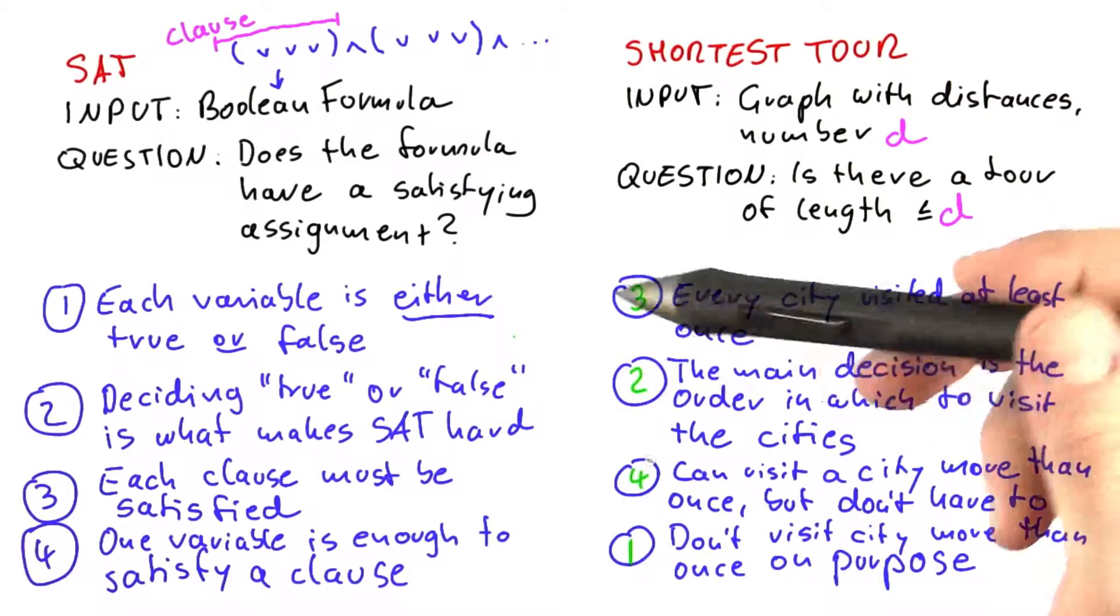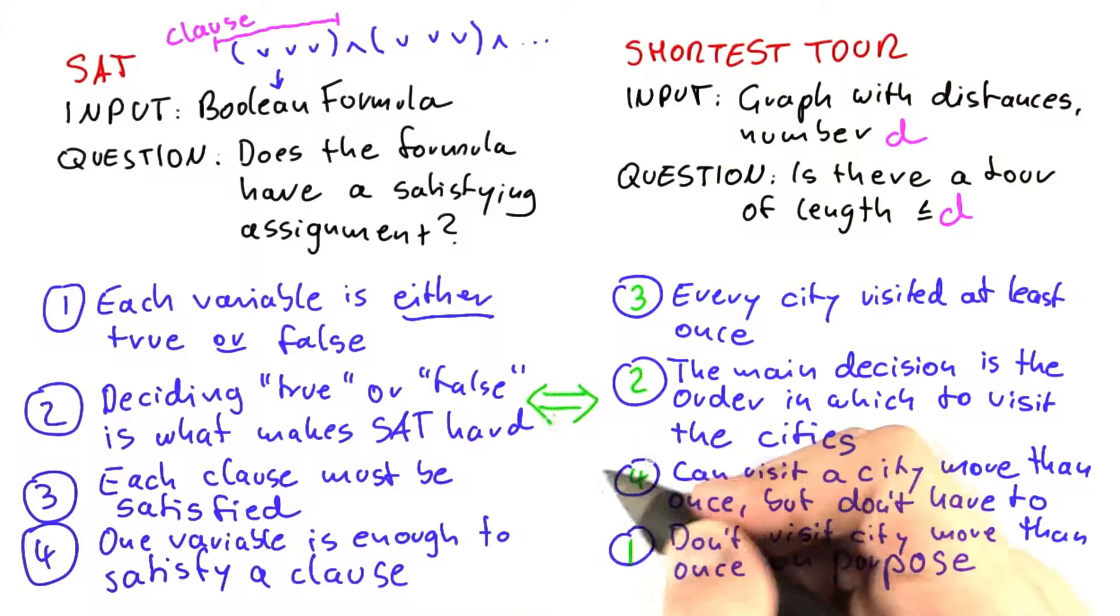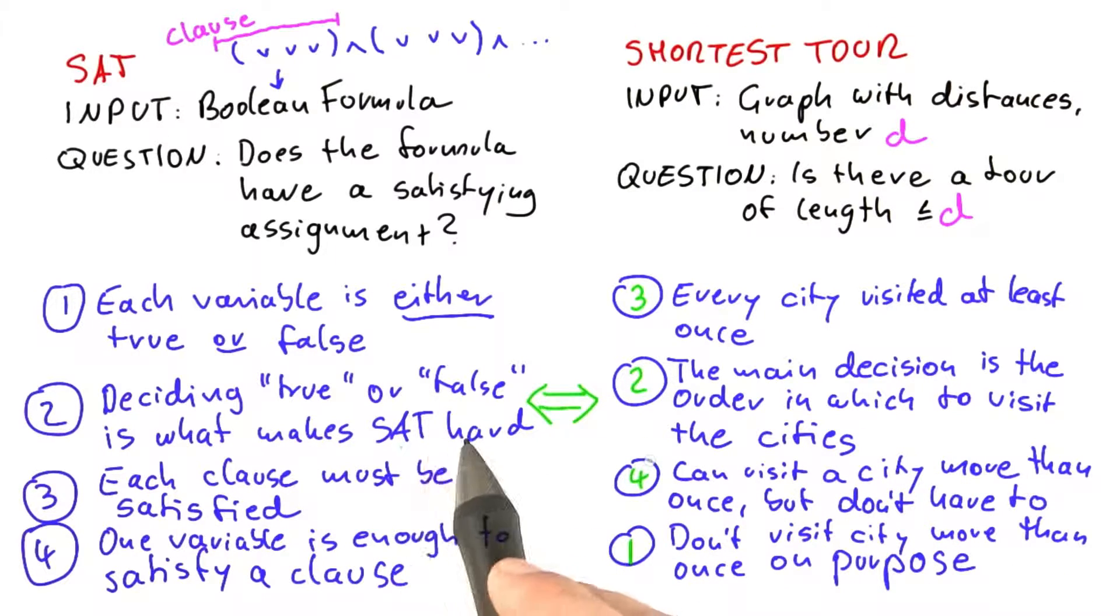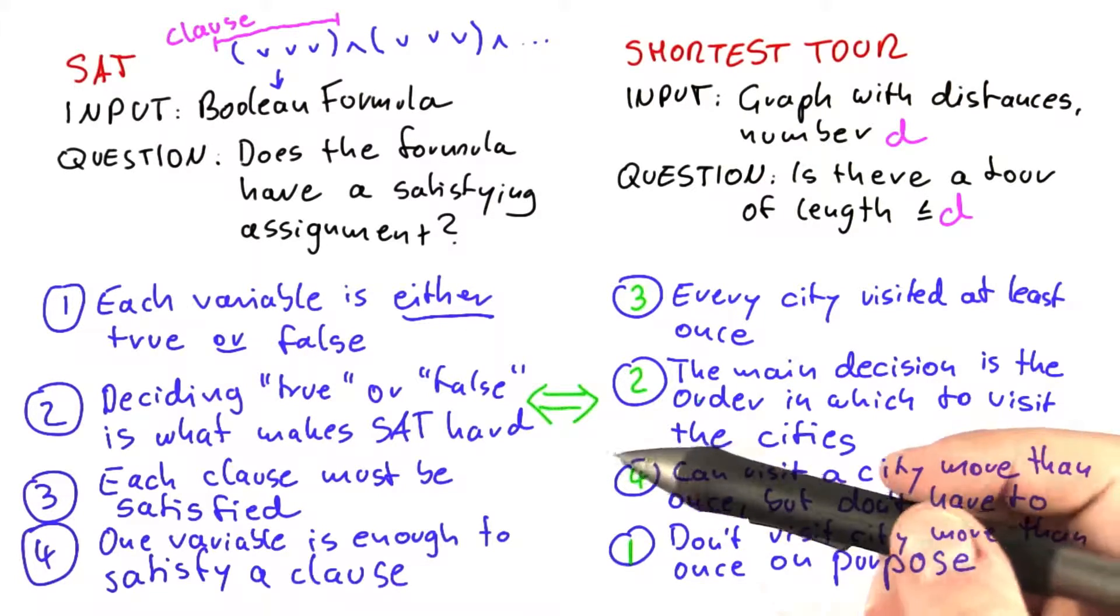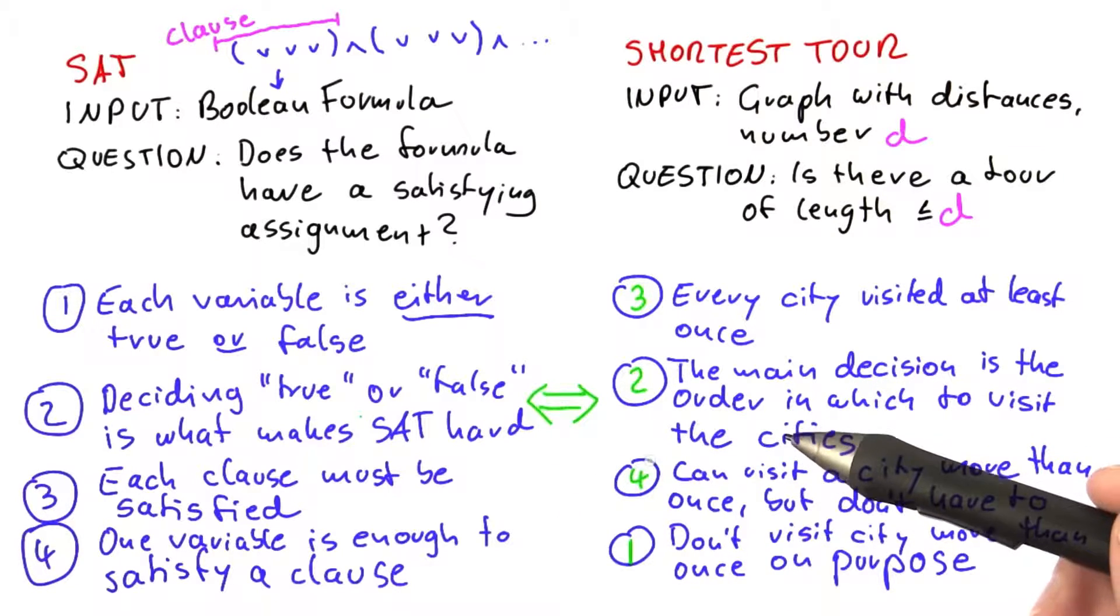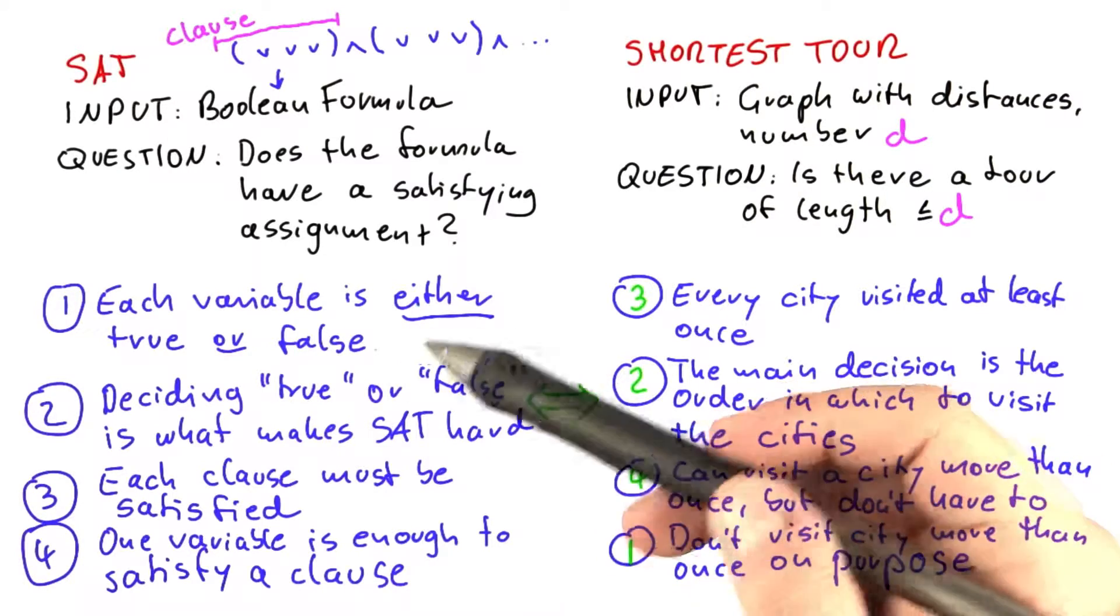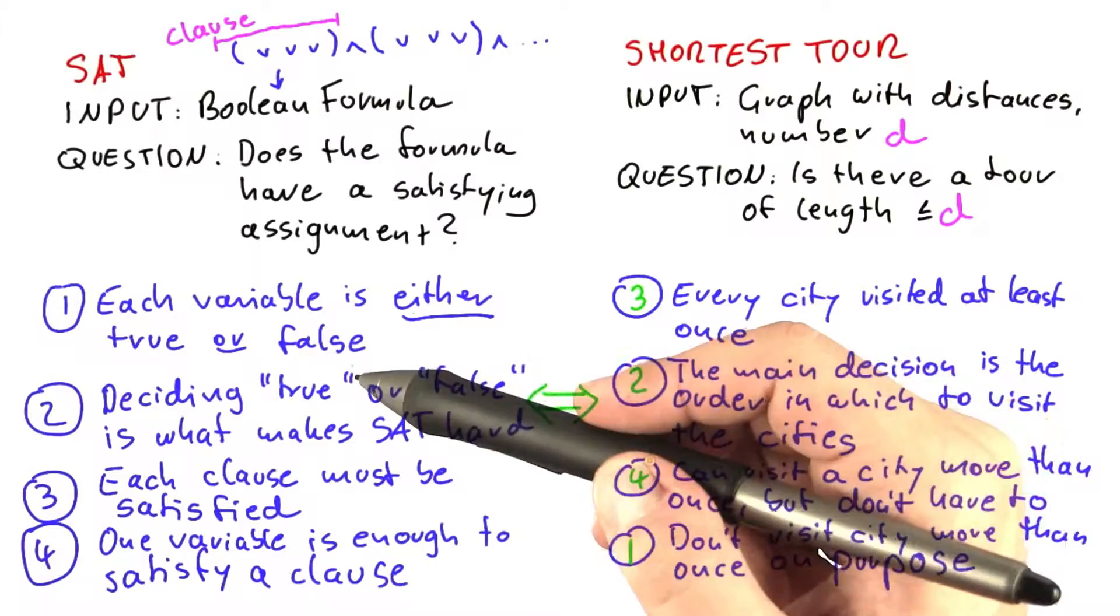Let's use this relationship to try and reduce SAT to shortest tour. And I think we should start out with this relation here. Deciding true or false is what makes SAT hard. The main decision is the order in which to visit the cities. So the important insight here is that we should try and find some way to represent true or false as an order in which cities are visited. And to ensure through that order also that you cannot have an ambiguous assignment of true or false. So basically, you have to make a decision in which order you visit the cities and that must represent either true or false.